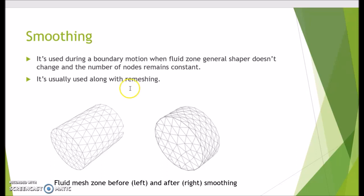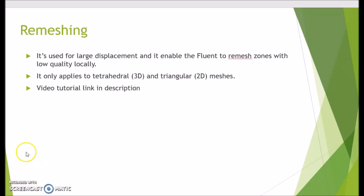Let's move to the last meshing technique which is called remeshing. Basically it's a branch of smoothing, but the issue with smoothing is when you have large displacement, it's gonna fail. Remeshing enables Fluent to remesh zones with low quality locally, and it only applies to tetrahedral in 3D and triangular in 2D meshes, so that's a restriction you need to consider.